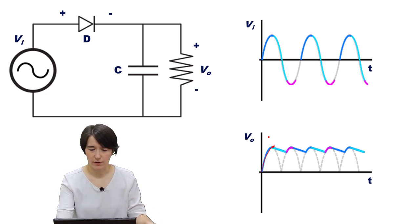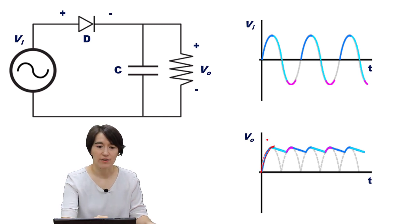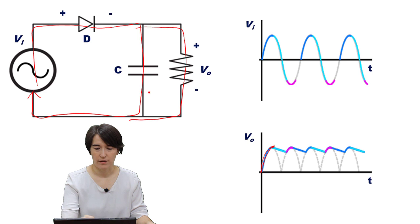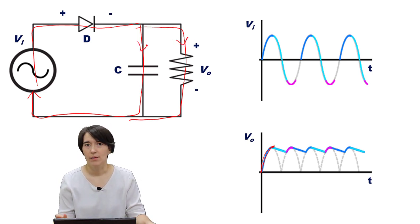When it's flowing from zero up to that maximum point, current is at that time going to be flowing through the diode, through the capacitor, and through the resistor. So we have two current paths there.